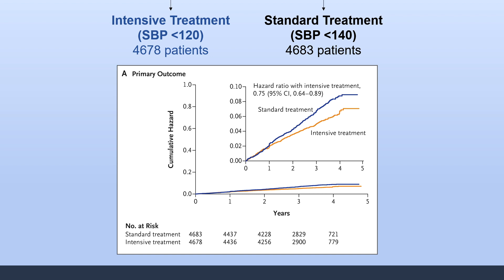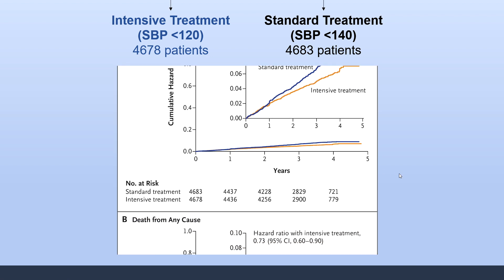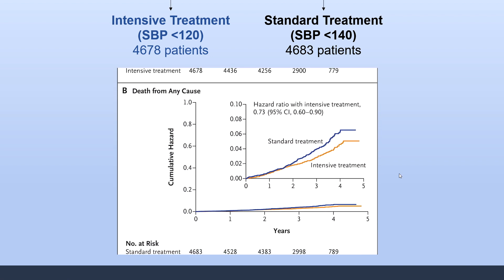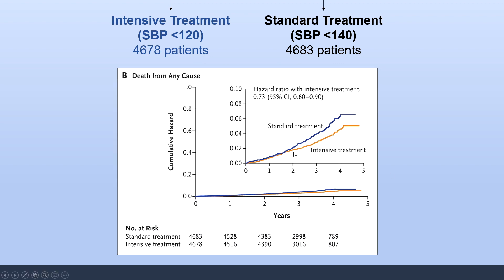Graphically, the intensive treatment group showed much better cardiovascular outcomes compared to the standard treatment group. Looking at death from any cause, the intensive treatment group was also significantly lower, with a hazard ratio of 0.73 and a confidence interval of 0.60 to 0.90.